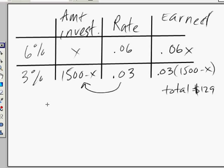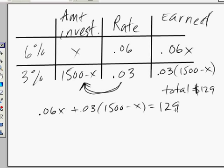So what we need to do is we need to get our equation out here. So .06x plus .03, so we multiply rate times the amount invested. So .03 times 1500 minus x equals 129.